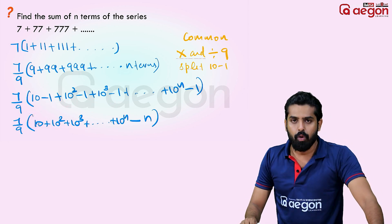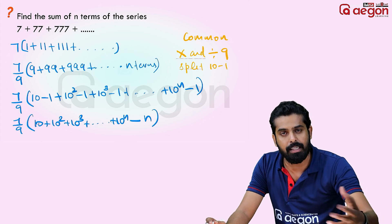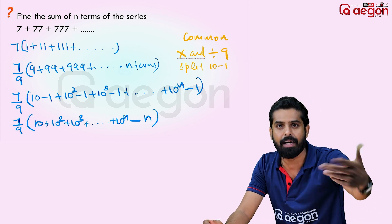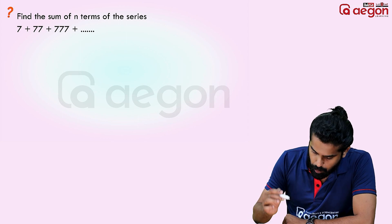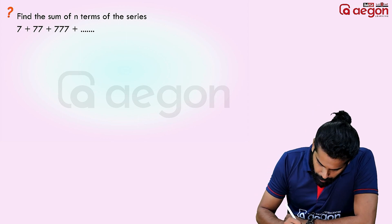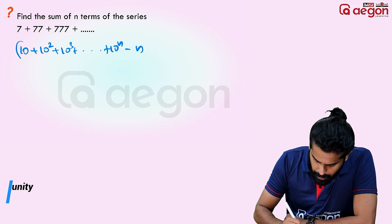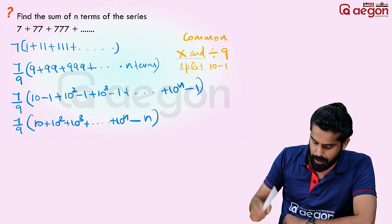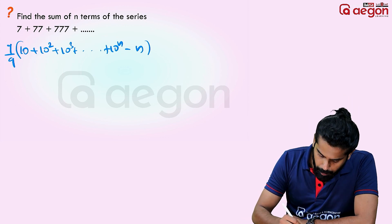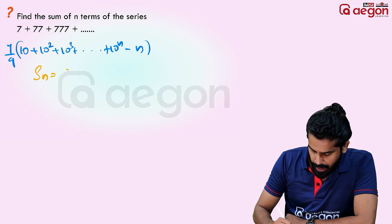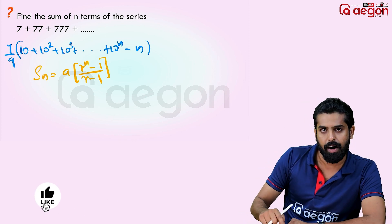So 10, 10 squared, 10 cubed — you start at 10, multiplied by 10 each time. So there is a GP. The first term is 10, common ratio is 10. Now we apply the GP sum formula: S = a into r raised to n minus 1, divided by r minus 1.